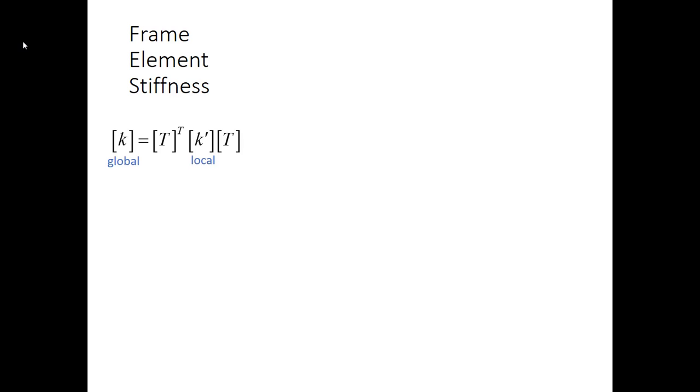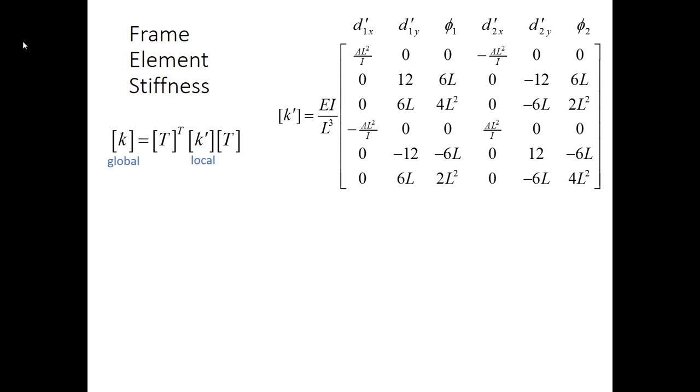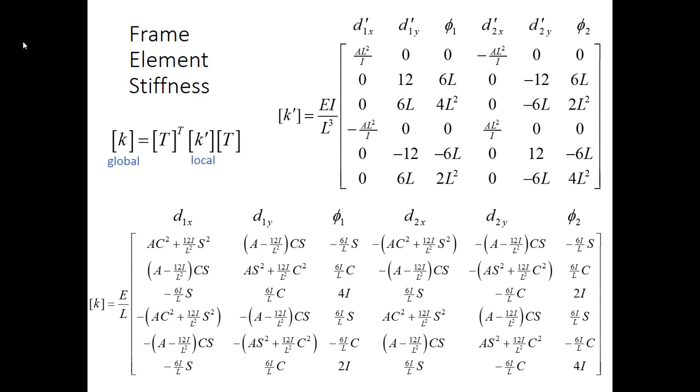First let's take a quick look at the frame element stiffness matrix. Previously we developed this stiffness matrix for the frame. Remember this is in local coordinates though. So now we need to pre-multiply it by T transpose and post-multiply it by T. And when we do that we end up with this matrix. I'm not going to show you the multiplication. You're going to have to trust me on this one.